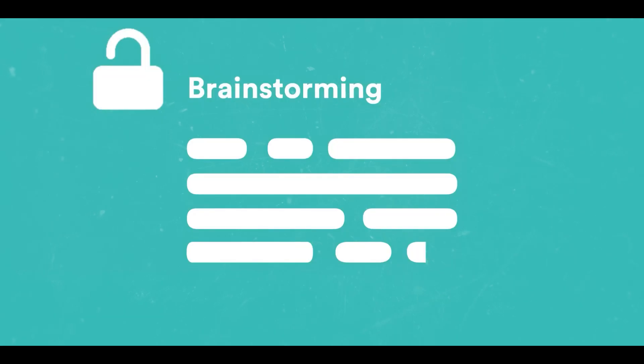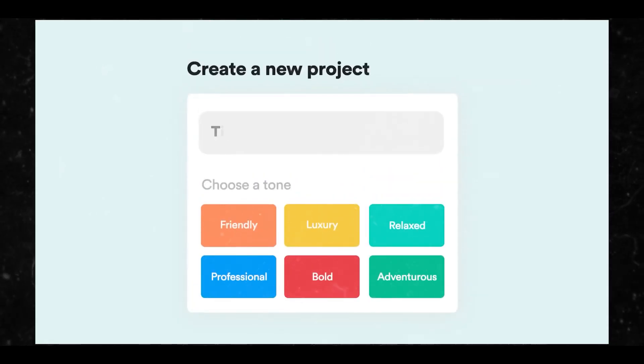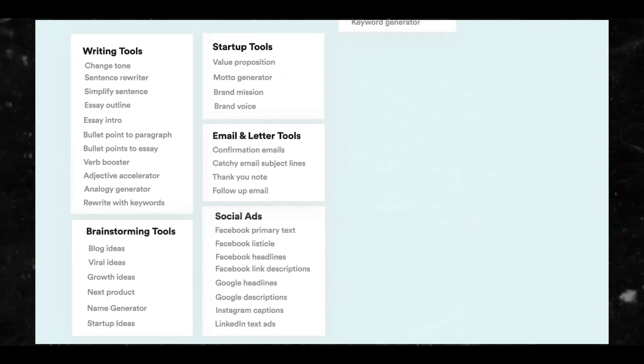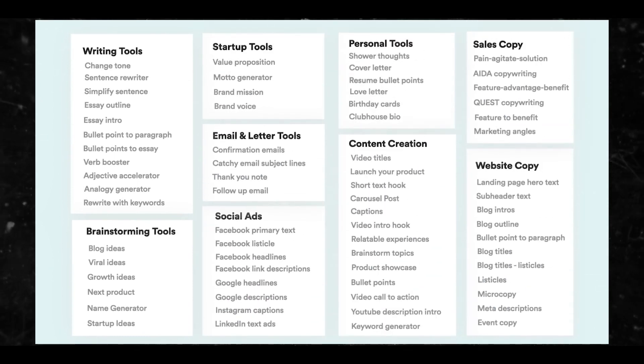Next we have Copy.ai. Copy.ai brands itself as your brainstorming buddy, and we all know the place brainstorming holds in the creative process. This AI writing tool is great for creating a large variety of content, from long-form articles and social media posts to product descriptions and ad copy. Some of the best features are the brand voice feature, which ensures your content stays true to your brand's voice, style, and tone, plus 90-plus copywriting templates including blog posts, headlines, digital ad copy, and more.